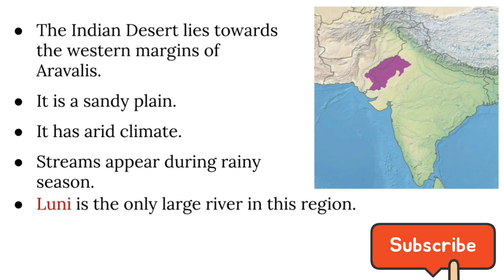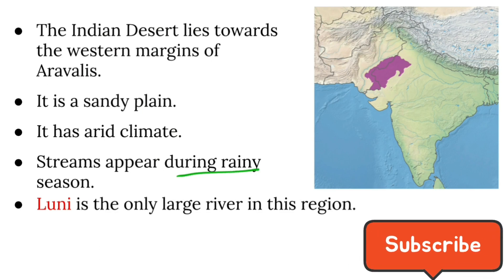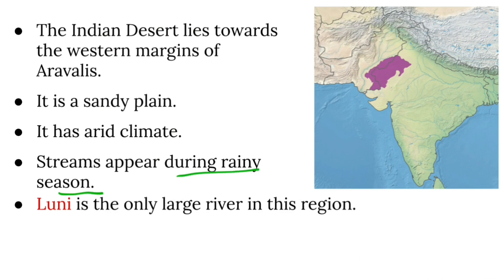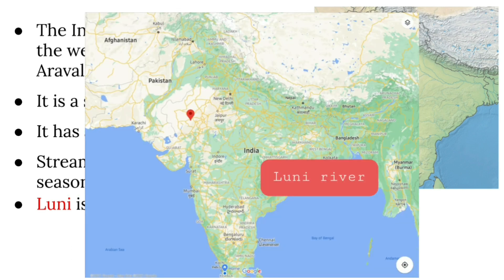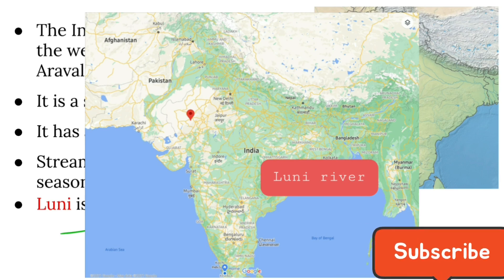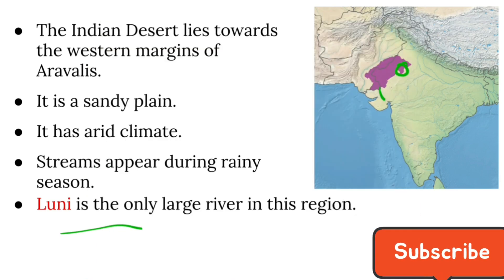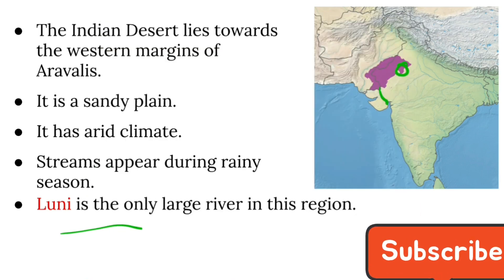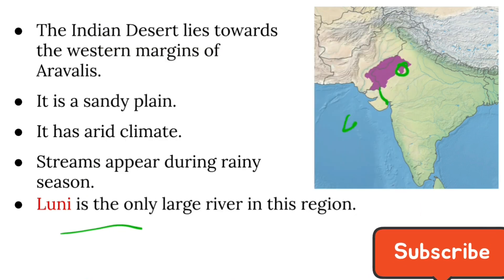Streams appear during the rainy season and they soon disappear because they don't have enough water to reach the sea. The Luni is the only large river in this area. It extends from the Pushkar valley and ends in the Rann of Kutch, about 495 km.